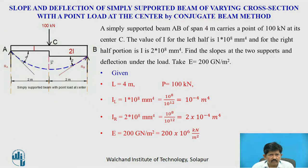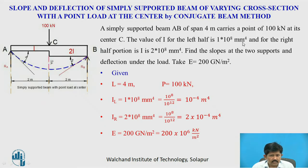Now we will find the slope and deflection of a simply supported beam of varying cross-section with a point load at the centre. The beam span is 4 meters (2+2 meters), the load is 100 kN acting at point C, the moment of inertia for the left half is 1×10⁸ mm⁴ (I), and for the right half is 2×10⁸ mm⁴ (2I). We need to find slope at both supports and deflection under the load, where E is 200 GPa.